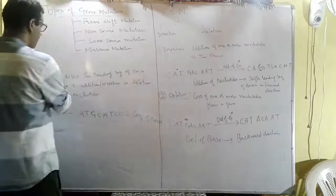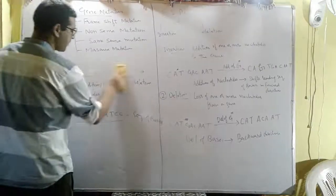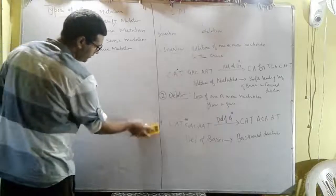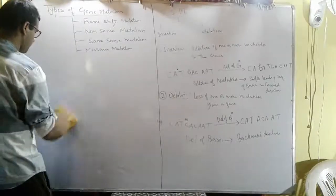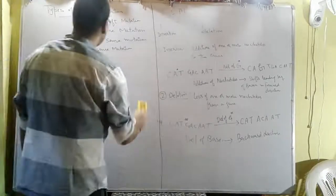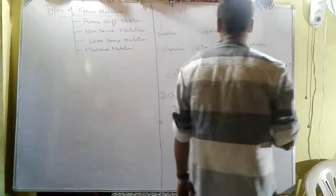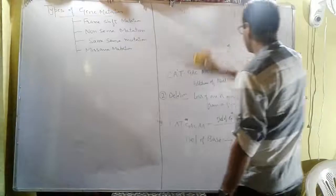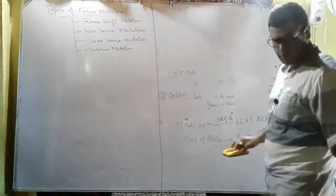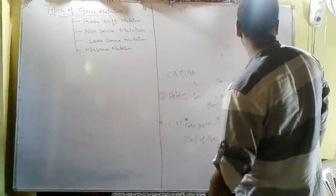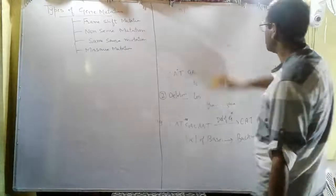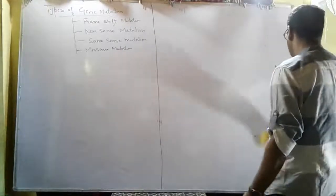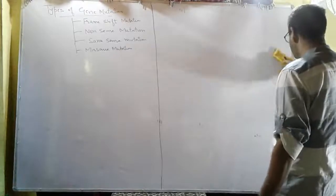Then we have nonsense mutation. Nonsense mutation is that type of mutation which stops the polypeptide synthesis. This nonsense mutation stops polypeptide synthesis due to the formation of termination codons: UAA, UAG, UGA.